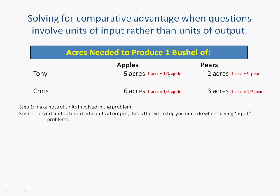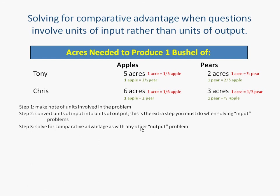Once we've made those conversions, we want to write all of them down. Now that we've got units of output, we're ready to analyze the problem as if it were just a normal output problem. This intermediate step — step two — is the one that confuses students, so be aware that if it's a question involving input, you've got to do the second step before you move on to the third step. The third step is fairly straightforward: we want to figure out the opportunity cost. So we take a look at Tony's one-fifth of an apple.